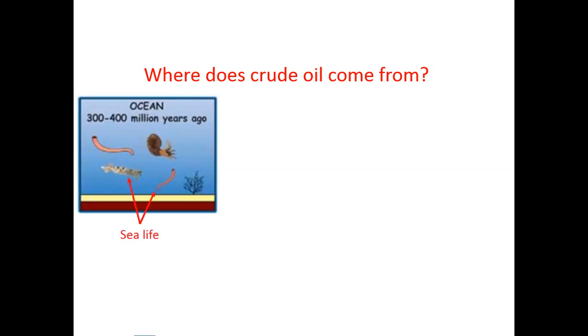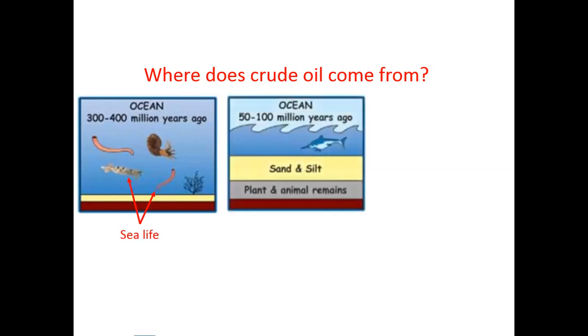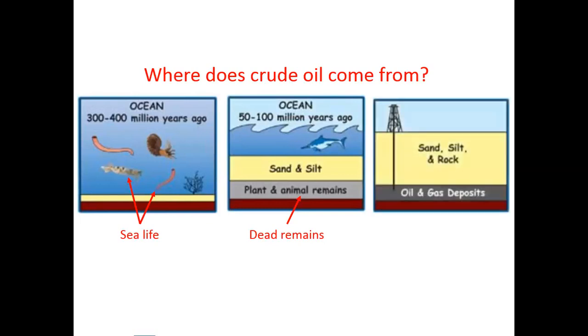What happened over the course of time, those sea creatures died and formed a layer on the bottom of the ocean. You can see sat on top of that layer is a layer of sand and silt. Now over the course of time, that sand and silt and rock layer got bigger and bigger, pushed down on that layer of animal and plant remains, created a lot of heat, a lot of pressure, and that turned the remains of animals and plants into crude oil and natural gas.